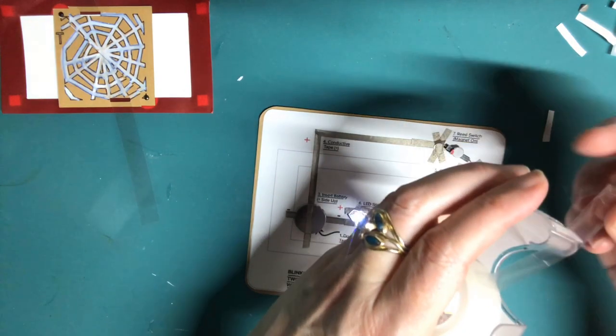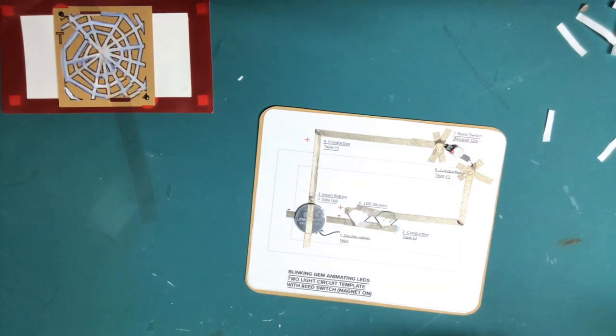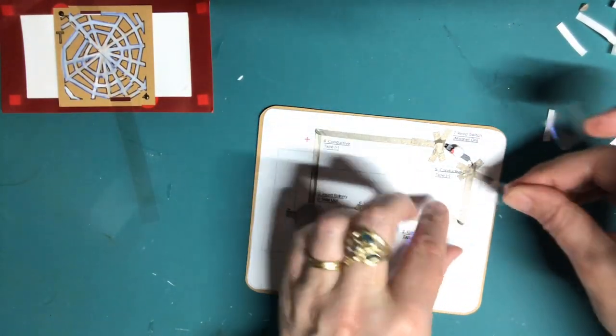To keep the metal legs of the reed switch from pulling away from the conductive tape over time, it's a good idea to reinforce the conductive traces with a piece of scotch tape.